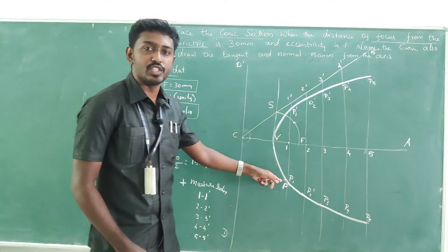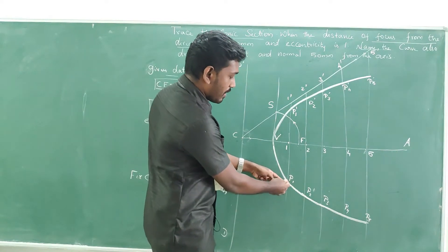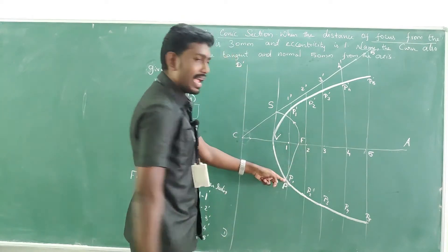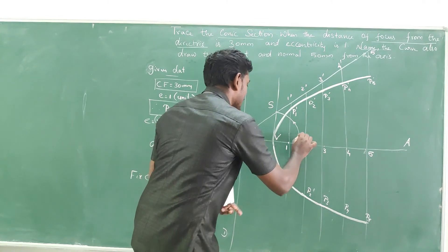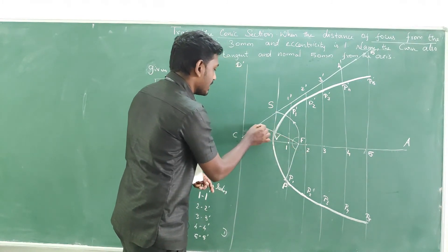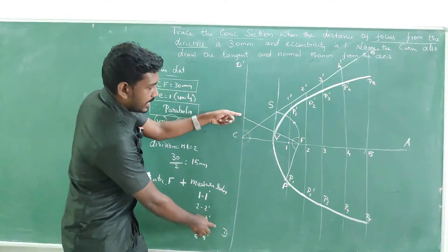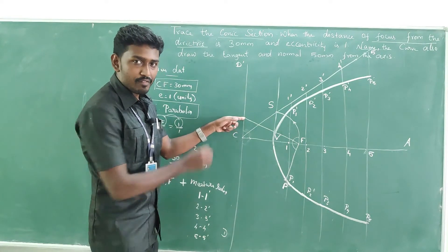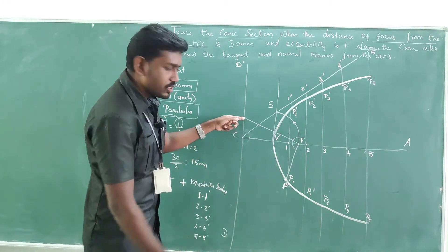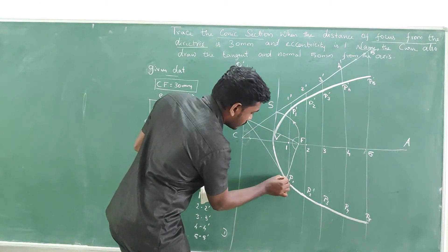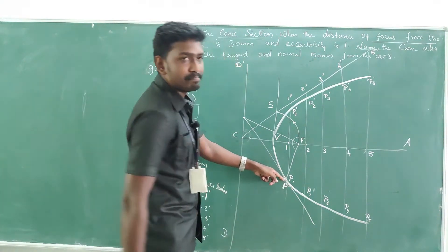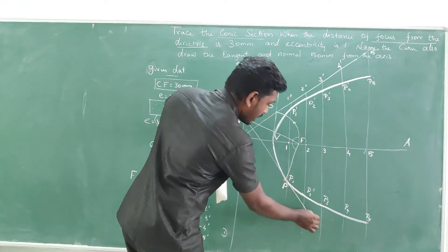This is point P. Now, following the same procedure as for the ellipse: join P to F with a line. Then keep your protractor on line FP, make F the center, measure 90 degrees, and direct a line toward the directrix D'-D. You get an intersection point on the directrix. Draw a line from that intersection to point P — that is your tangent T-T', passing through the outer periphery of the curve.